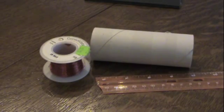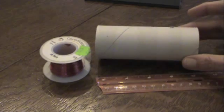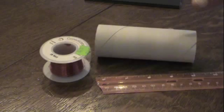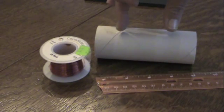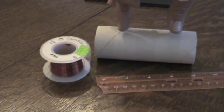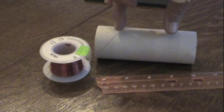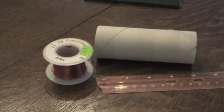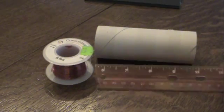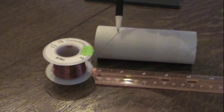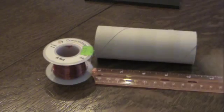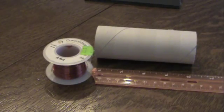The first step is to wind the coil. We want to cover two and a half to two and five eighths inches of the toilet paper roll with the 26 gauge magnet wire. Using a ruler, we'll mark off about two and a half inches, then start winding the coil.